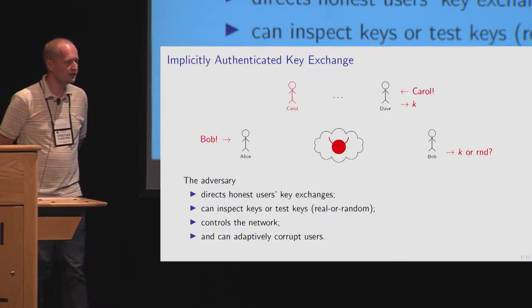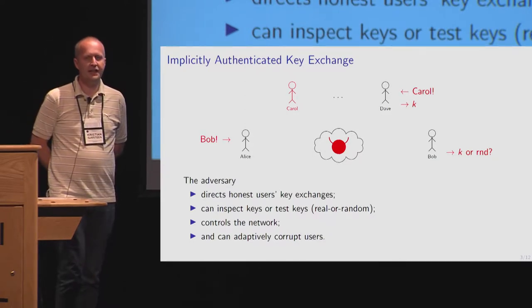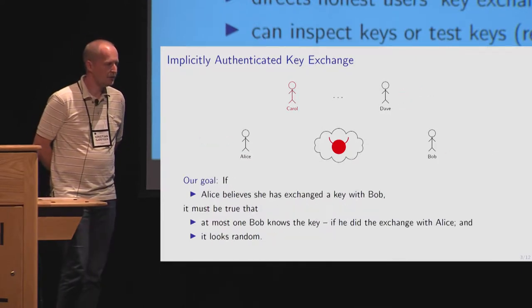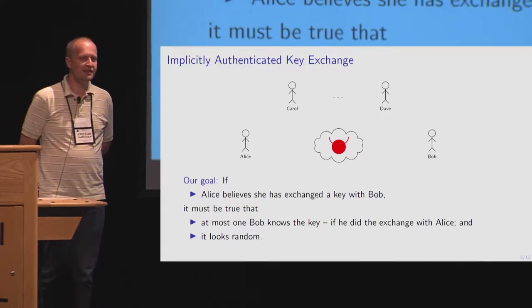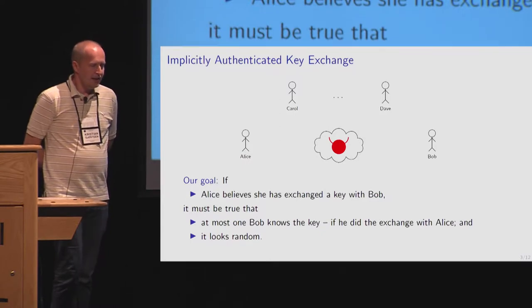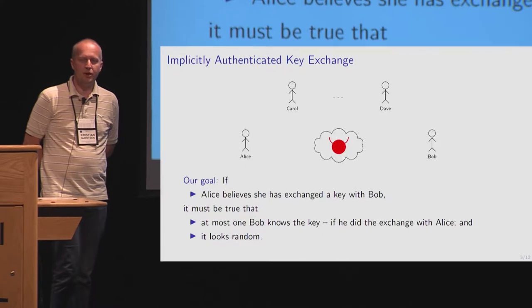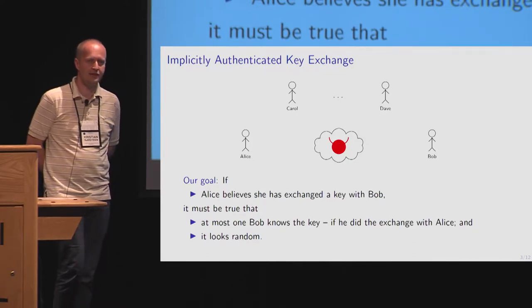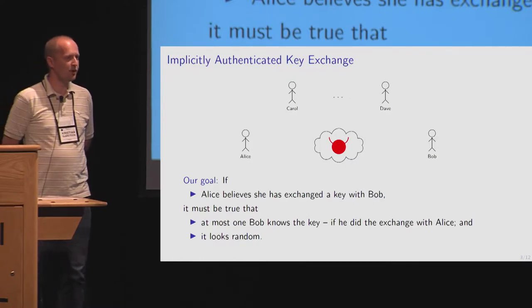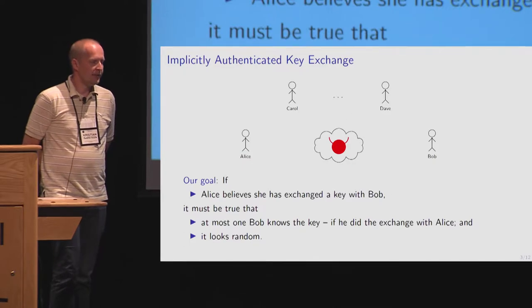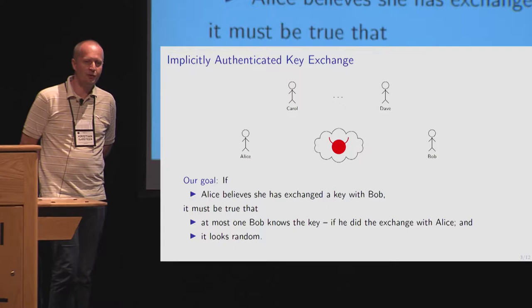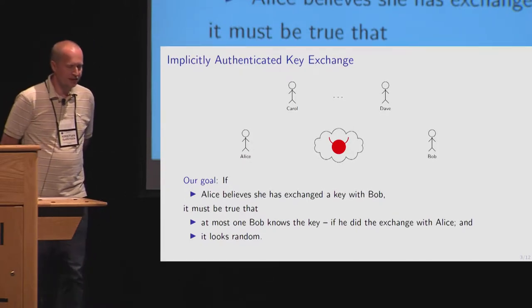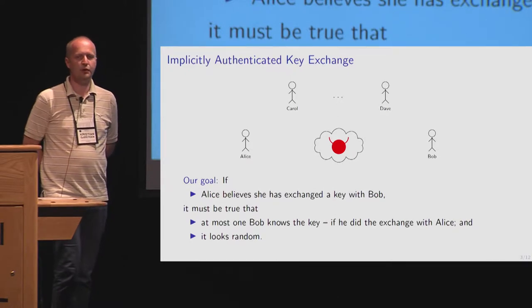The adversary controls the network and can adaptively corrupt users. Our goal for security in implicitly authenticated key exchange is: if Alice believes she has exchanged a key with Bob, then Bob is the only one who could possibly know that key if he participated. If Bob didn't participate, then there's no one but Alice that knows the key, and there's only one instance of Bob that has this key. This is sufficient — when you start using this key and can use it successfully, the authentication is there. To get implicit authentication, this key has to look random to everyone not supposed to learn it.